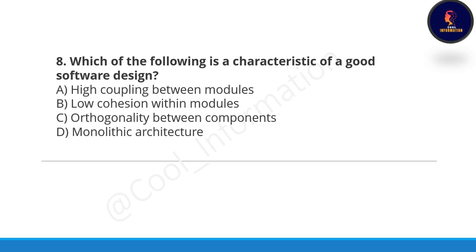Next question: which of the following is a characteristic of a good software design? Option C is correct — orthogonality between components is a characteristic of a good software design.